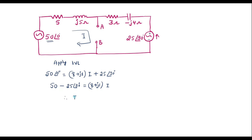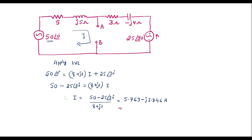Therefore I can write I is equal to (50 − 25∠90°) divided by (8 + j1). Feeding these values directly into the calculator, the result is 5.769 − j3.846 amps, which in polar form is 6.93∠−33.69° amps.